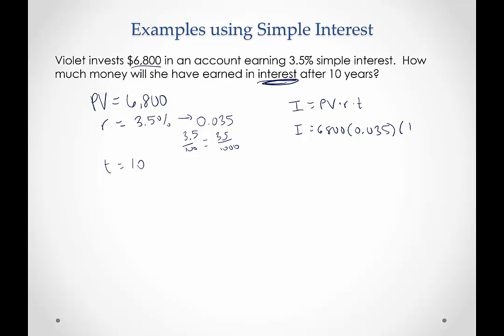And you'll know if you forgot to change your rate to a decimal or fraction, because you'll have a really huge number if you don't do that. So when we multiply these all together, we end up with her earning interest of $2,380. So that's the interest that she earned. It doesn't ask us for the future amount, just the interest.